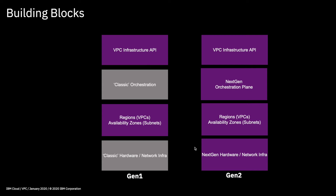Gen 2 is built across the same regions — at the time of recording it's not in quite as many regions as Gen 1, but by the middle of 2020 and beyond it will be available in all the availability zones that Gen 1 is in. It also uses our next-gen orchestration plane, which means that when you provision services in Gen 2, rather than waiting two or three minutes for a virtual machine or up to 15 minutes for a load balancer, you're talking about 30 seconds for a virtual machine and around two minutes for a load balancer — so it's far quicker in terms of orchestration.